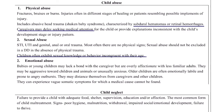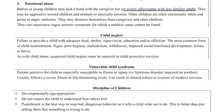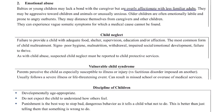Emotional abuse is when the child lacks a bond with the caregiver but is overly affectionate with less familiar adults. Emotional abuse is linked to many serial case histories. Child neglect — when you fail to provide the child with adequate food, shelter, supervision, education, or affection — leads to developmental disorders. You must report these to child protective services to ensure the child is protected.